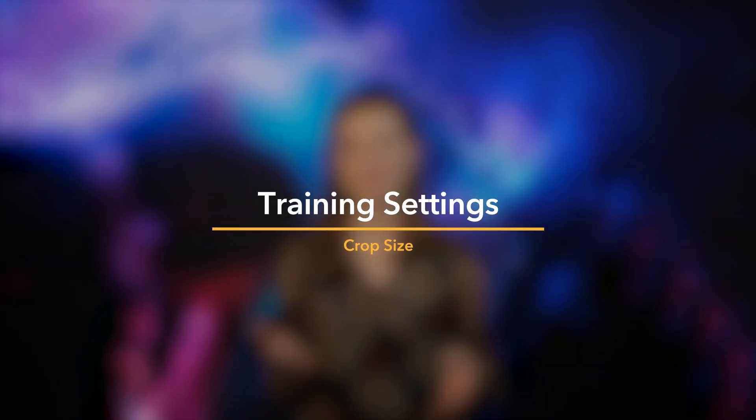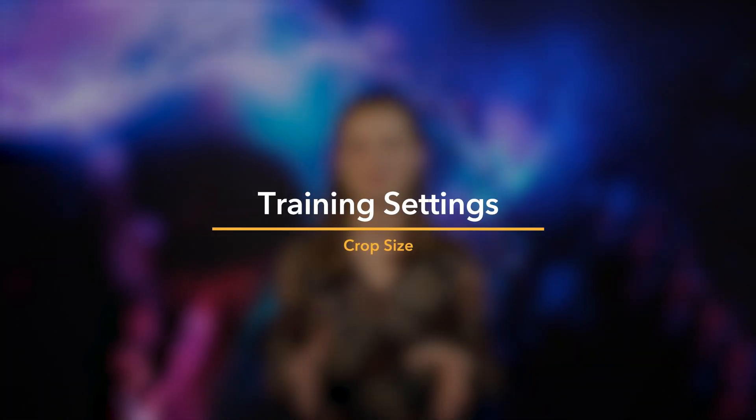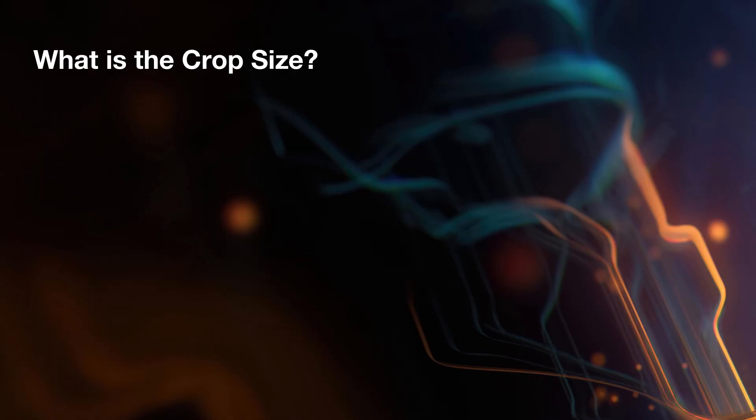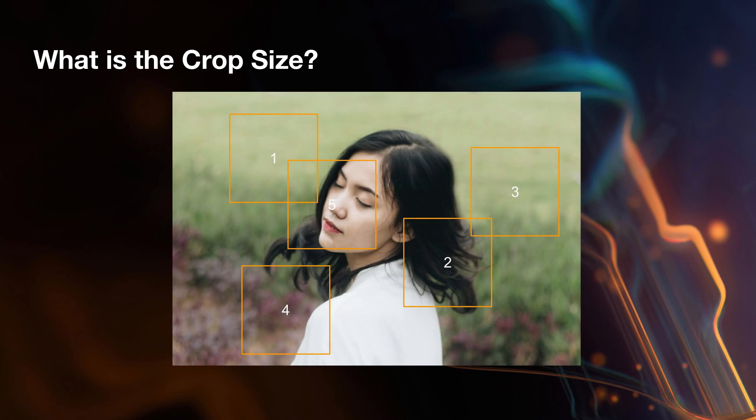Crop size is another important parameter when training CopyCat. When CopyCat is training, instead of processing the entire input frame at each step, it will only process a random selection of different crops from the input and ground truth frames. The size of these crops is determined by the crop size.